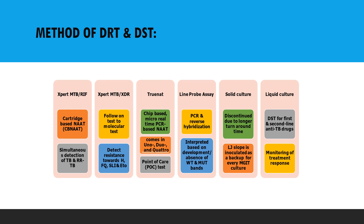Genotype MTBDRplus is a cartridge-based NAAT that helps in simultaneous detection of rifampicin resistance. Genotype MTBDRsl is a follow-on molecular test that detects resistance to isoniazid and second-line drugs. It comes in Duo and Quattro formats, as a point-of-care test in single, double panel, or four-module configurations. Line probe assay (LPA) is a PCR and reverse hybridization principle-based method; interpretation is based on development or absence of wild-type and mutant bands.